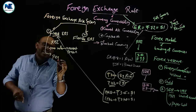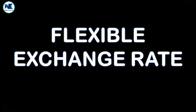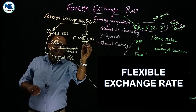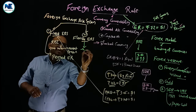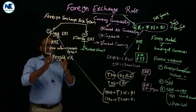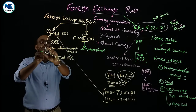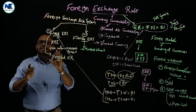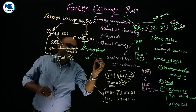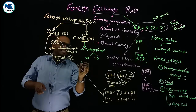A fixed exchange rate is a country's exchange rate regime under which the government or central bank ties the official exchange rate to another country's currency or the price of gold. It is also called a pegged exchange rate — pegged or fixed exchange rate. The flexible exchange rate system is another foreign exchange rate system where the exchange rate is determined by market forces — very, very important.